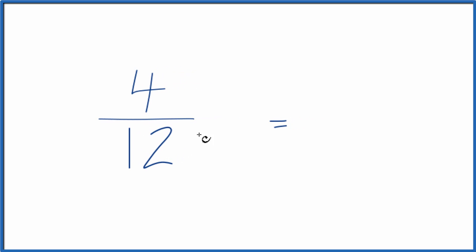So for 4 twelfths, I think we can just reduce this. 4 goes into 12 three times, so we'll divide 4 by 4, that gives us 1, and 12 divided by 4, that gives us 3. So one-third, that's an equivalent fraction to 4 divided by 12.